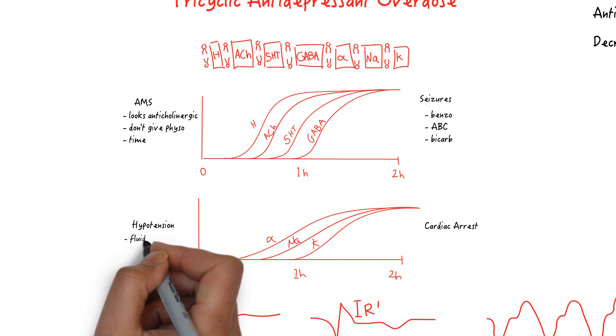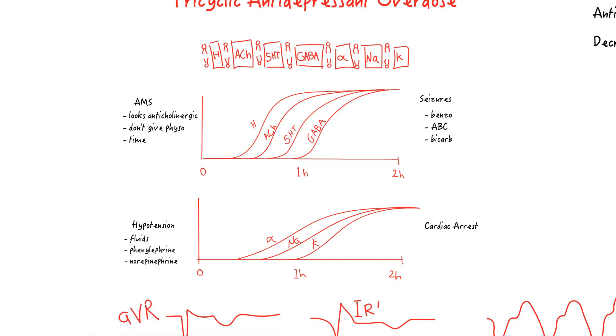Hypotension is treated with fluids and pressors. Wide complex tachycardia is treated first line with amps of sodium bicarbonate, hypertonic sodium as the second line, intralipid as the third line, and lastly, lidocaine.